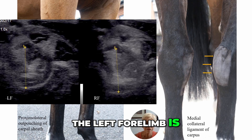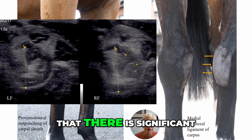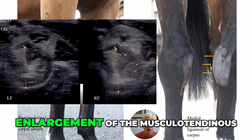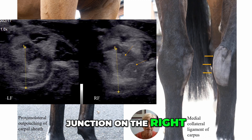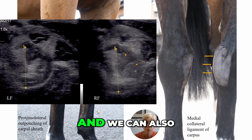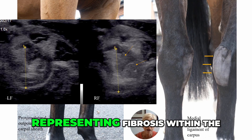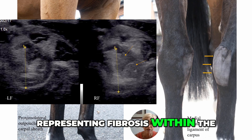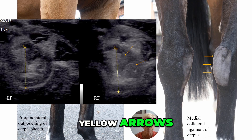The left forelimb is to the left and the right forelimb is to the right. We can see that there is significant enlargement of the musculotendinous junction on the right side compared with the left. We can also see areas of hyperechogenicity, representing fibrosis within the muscle tissue highlighted by the two yellow arrows.